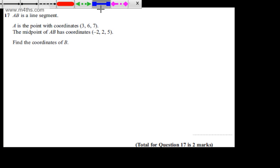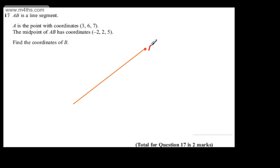I'm just going to draw a quick sketch. You certainly don't need one, but it might help out. So what we've got then, we've got this point just here. This is going to be A, and we've got 3, 6, and 7. We've got the midpoint, which I'm just going to call M, and that's going to be minus 2, 2, and 5.